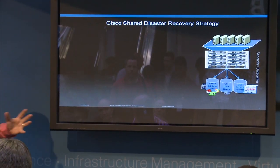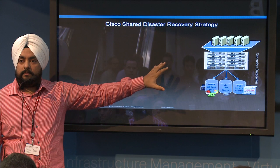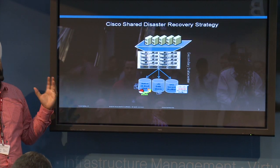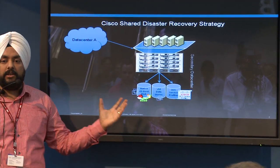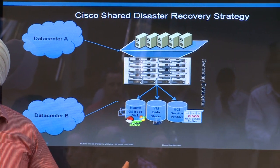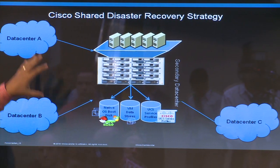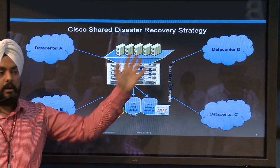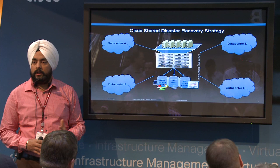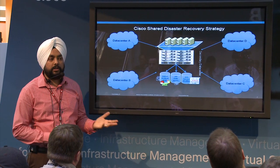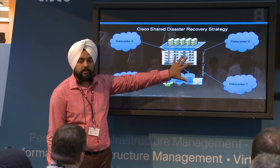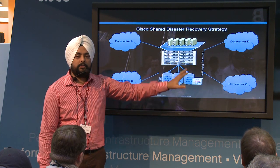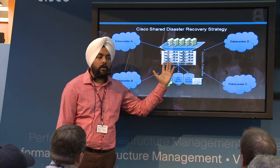Now you can take your secondary site and map it to multiple data centers. What that means is that if your blades are there and all four sites are running just fine — operations are running on their primary sites — these blades are not doing anything. They are sitting idle, waiting for a disaster to strike on one of the sites so they can be brought online.